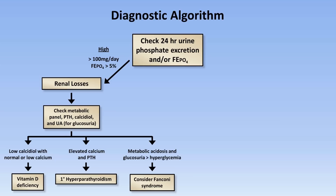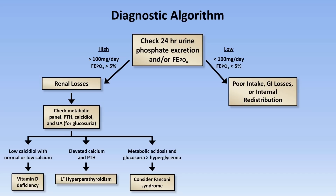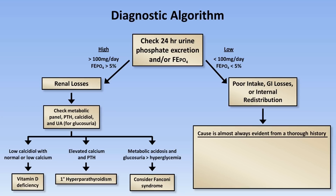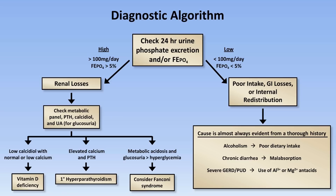Returning to the urinary phosphate excretion at the beginning, if it's low, that suggests either poor intake, GI losses, or internal redistribution. The cause here is almost always evident from a thorough history. If the patient is an alcoholic, it's probably from poor dietary intake. If he or she has chronic diarrhea, consider malabsorption. If the patient has severe GERD or peptic ulcer disease, double check if they are taking over-the-counter aluminum or magnesium-containing antacids. And if the patient is recently status post-parathyroidectomy, the diagnosis is highly likely to be hungry bone syndrome.